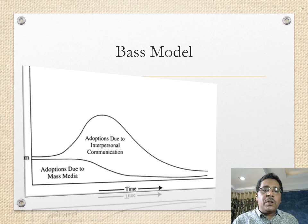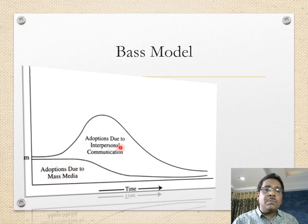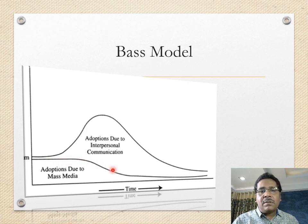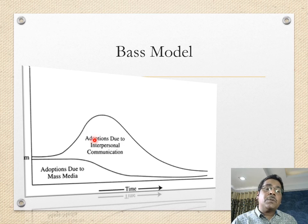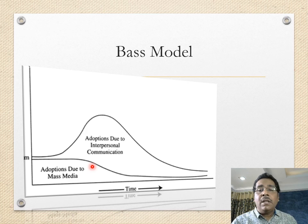Bass's model identifies two key factors for adoption of new ideas or technologies: mass media and interpersonal communication. Initially, mass media is very important, but beyond a certain stage its impact decreases while personal communication becomes very important. Mass media campaigns alone are not enough — we have to use interpersonal campaigns through opinion leaders, influencers, and change agents. Bass's model highlights both factors as critical for the adoption of innovations.